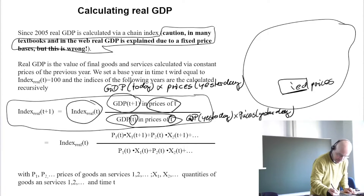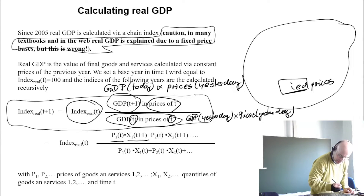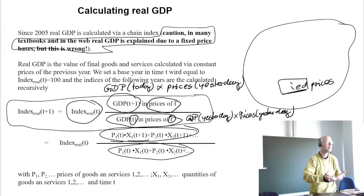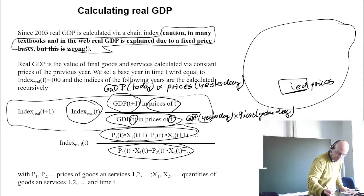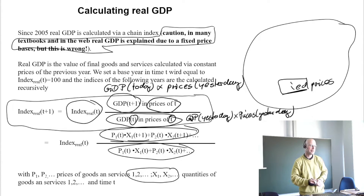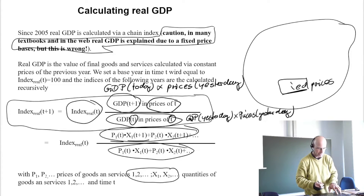So here you see: prices yesterday times quantities today, summing up all goods, divided by prices yesterday times quantities yesterday. This is basically the ratio of real GDP to nominal GDP of the previous period. Remember, the definition of GDP covers all goods and services of final consumption in our country.